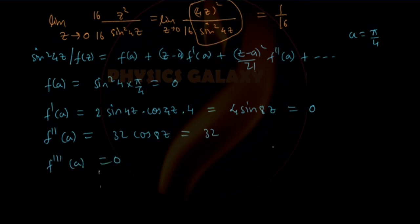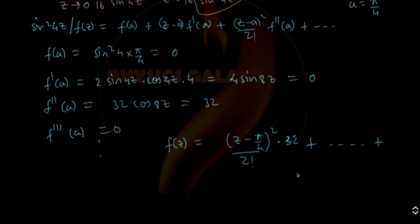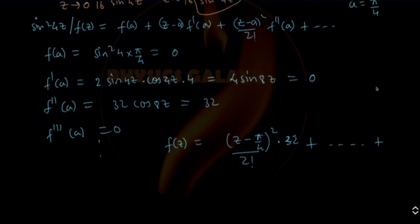You will realize that this function sin²(4z) looks like (z - π/4)² · 32/2! plus higher power terms. Clearly we know that there is a pole here, and the pole is of second order because you get (z - π/4)² in the denominator, and everything else is zero initially.